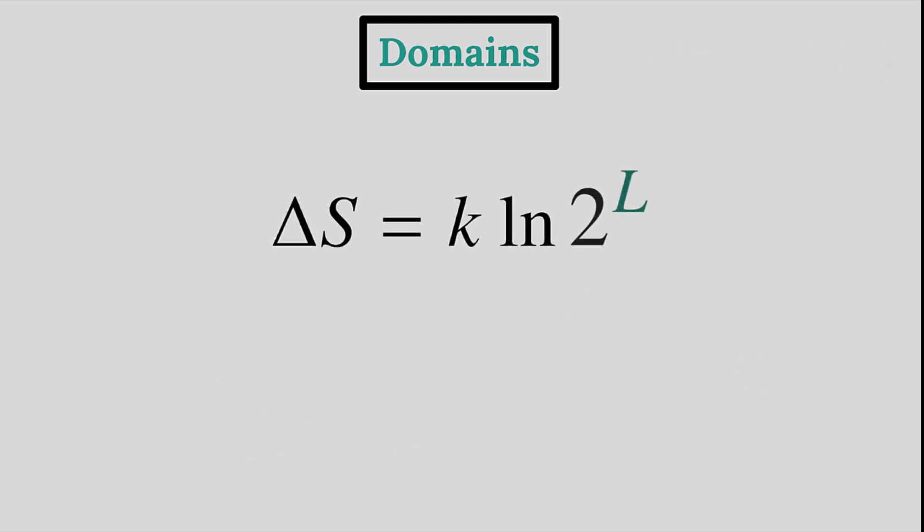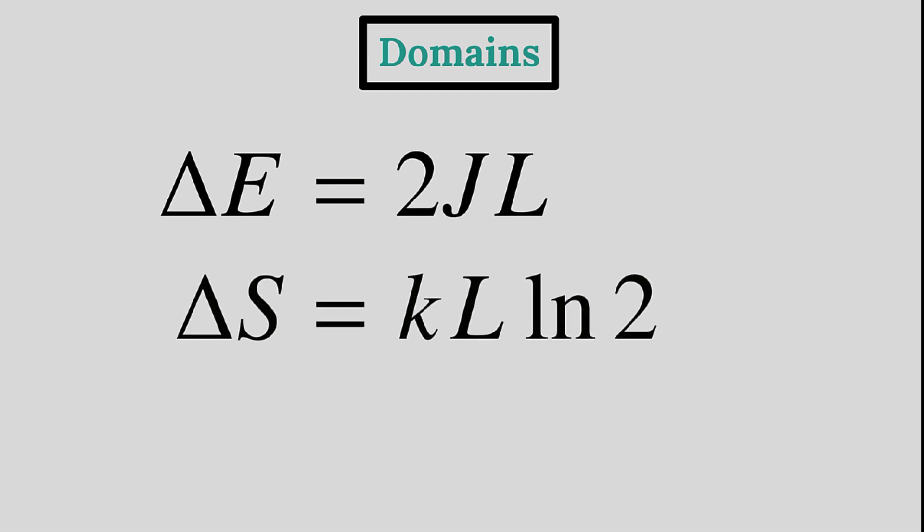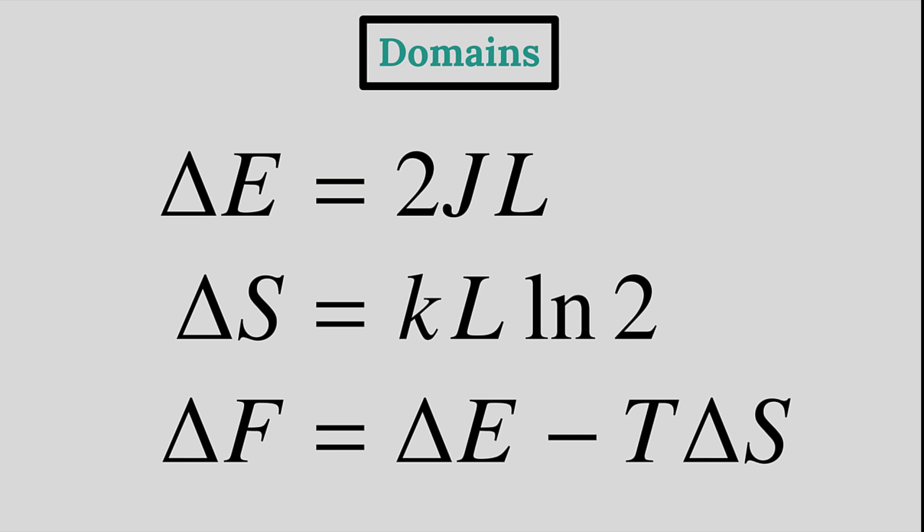That's it. We have found our two protagonists, the variation in energy and entropy induced by the spontaneous creation of a domain of perimeter L. Now we can find the associated change in the Helmholtz free energy and check for an important property called stability. Substituting both delta E and delta S into the previous expression and factoring out L yields this important equation for the change in the Helmholtz energy.